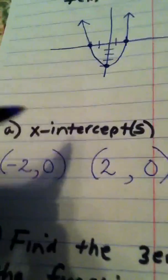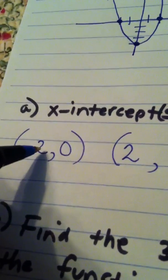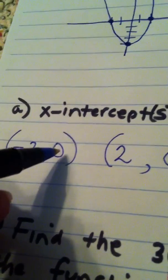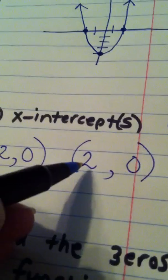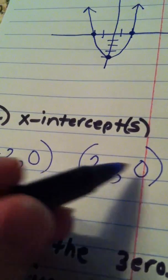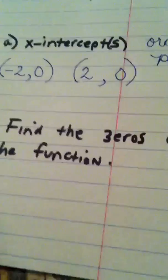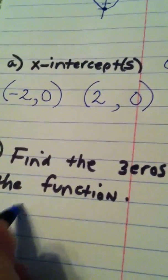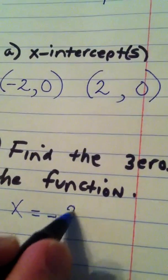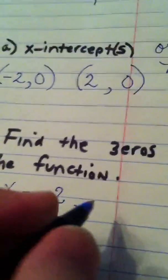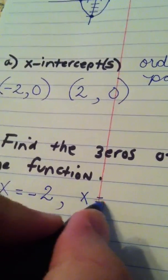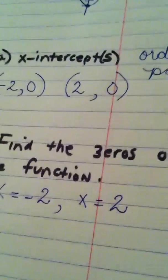Well, negative 2 was an x value that caused y to become 0. 2 was also an x value that caused y to become 0. So, the zeros of this function would be x equals negative 2, as well as x equals positive 2.